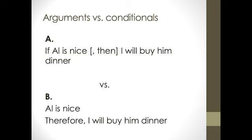Now A is not an argument. It is a conditional statement. Whereas B is an argument. A just establishes a condition. Namely, if Al is nice, I will buy him dinner. Or if Al is nice, then I will buy him dinner. This could be a premise in an argument. Now B is an argument. First, the premise is Al is nice. Therefore, in conclusion, I will buy him dinner. So notice that in B, I'm actually affirming that Al is nice. And that for that reason, I will buy him dinner.